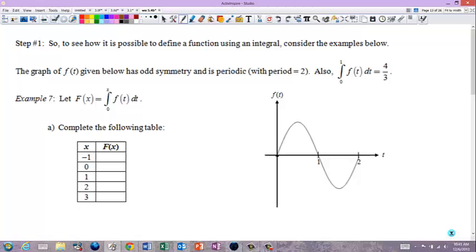So, what that means is, odd symmetry means that if you go negative 1, negative 2, it's going to come down and go back up. Okay? It says the integral from 1 to 0 is 4 thirds.